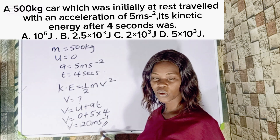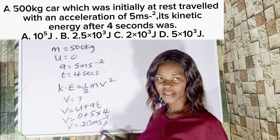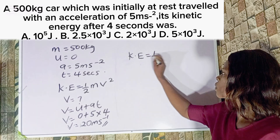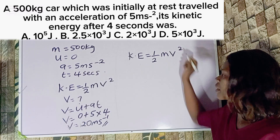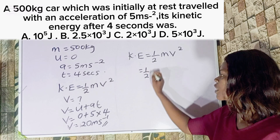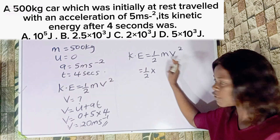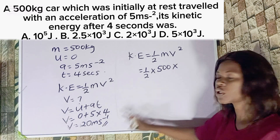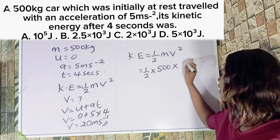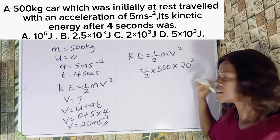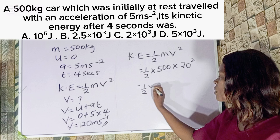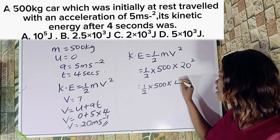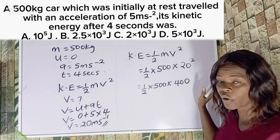Now if v is 20 meters per second, let's proceed to solve for kinetic energy. Using the formula, KE equals half mv squared. We have 1 over 2, multiplied by my mass which is 500, multiplied by my velocity which is 20 squared. Now 20 squared is the same as 20 times 20, which gives us 400.